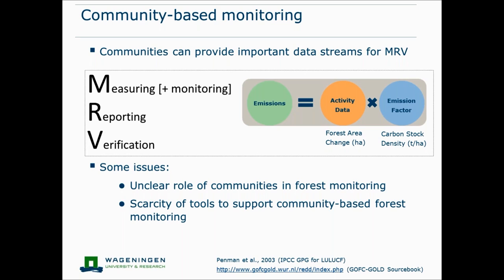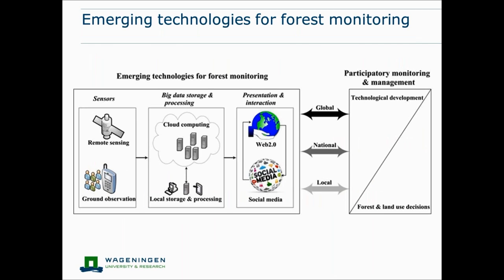For REDD Plus, emissions are calculated as activity data multiplied by emission factors. Activity data relates to forest area change and can be derived from remote sensing. Emission factors are mainly calculated for carbon estimation through diameter and height measurements of trees. However, there is no clear guideline on how to engage local communities in this MRV process, and there are still no clear roles and responsibilities for community-based monitoring, nor sufficient tools to support it.